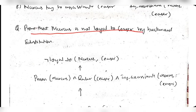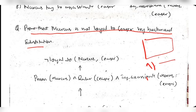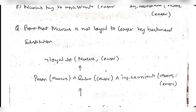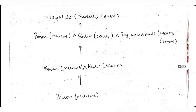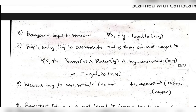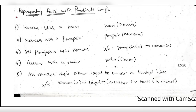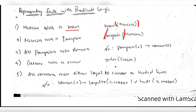In the exam, you may be asked to prove that Marcus is not loyal to Caesar by backward substitution, or by resolution proof. To convert the sentences into predicate logic: man(marcus), pompean(marcus). For 'all Pompeans were Romans,' since 'all' appears, write ∀x pompean(x) → roman(x). For 'Caesar was a ruler,' write ruler(caesar).